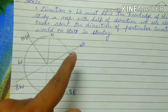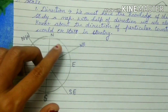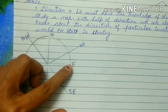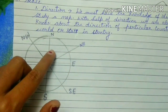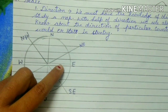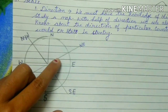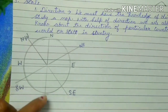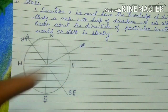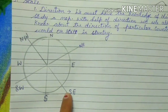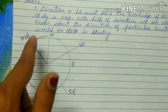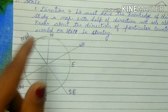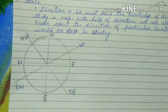The sub-direction that comes between north and east is called the northeast direction. In the same manner, the direction between south and east is the southeast direction. Similarly, there is the southwest direction and the northwest direction. These are our sub-directions.